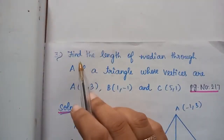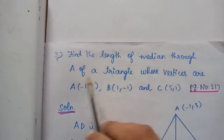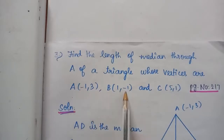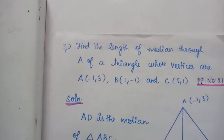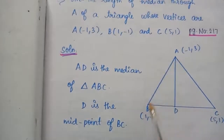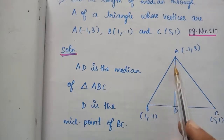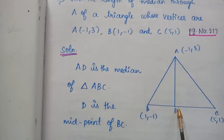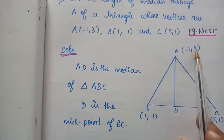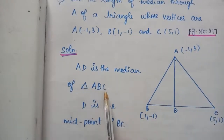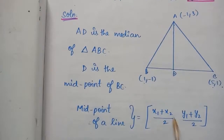Problem number 3, page 217: Find the length of the median through A of a triangle whose vertices are A(-1,3), B(1,-1) and C(5,1). Solution: AD is the median of triangle ABC, so D is the midpoint of BC. We will find the coordinates of D using the midpoint formula.